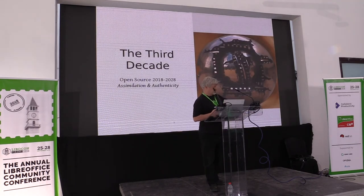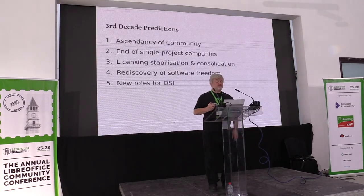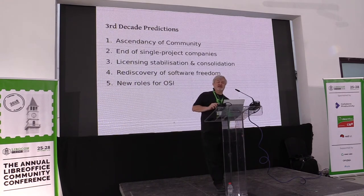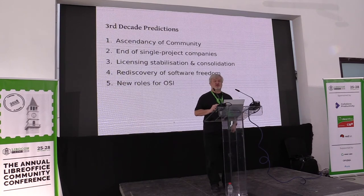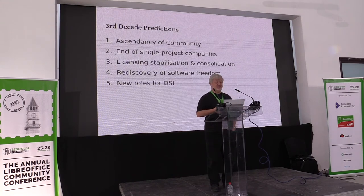So what's happening in the third decade of open source? Well, we're going to see five things happen. I think we're going to see the community becoming more and more central to what is going on with open source software. I think we're going to see single-project companies finding it harder and harder to create a viable business. I think we're going to see licensing change — it's going to stabilize and consolidate — and there are also going to be some challenges too.